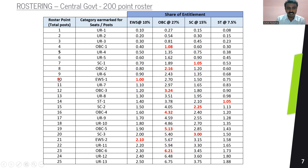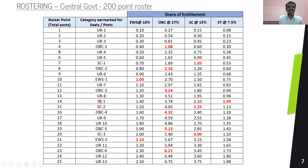Continuing on, at the tenth seat, EWS becomes entitled for its first seat. Till roster point nine, its entitlement was 0.9. At the tenth roster point, EWS reaches one seat entitlement, so we provide EWS one seat. And so on — whenever there is an additional entitlement, like at the 14th seat for ST, where 7.5% of 14 goes to 1.05, ST is entitled for its first seat. So wherever there is an entitlement, keep adding those particular categories at the roster points. If there is no entitlement, it remains UR. This is how the roster is prepared.